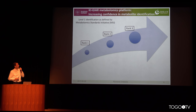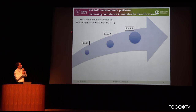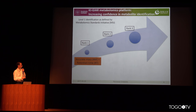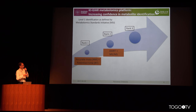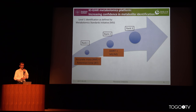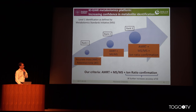Our identification ranks already start at level one as proposed by the Metabolomics Standards Initiative. In our rank one we have accurate mass and retention time. For rank two we add the MS/MS match — when we break down the molecule, the fragments are matching.